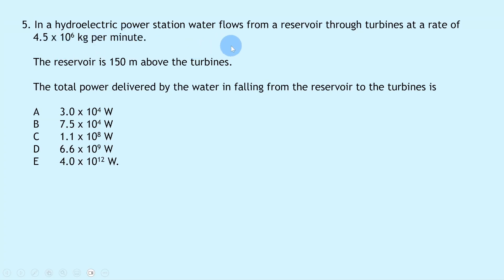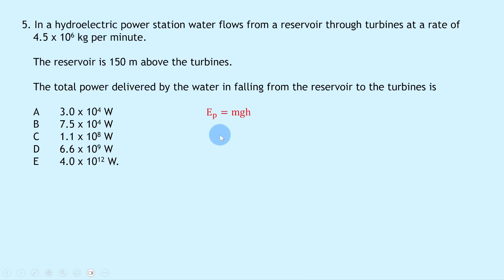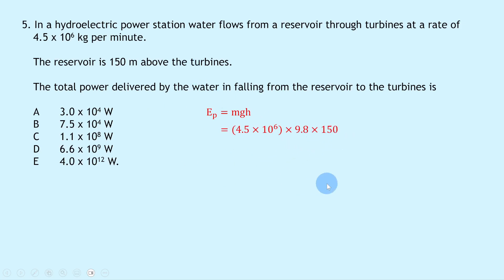Question 5 says in a hydroelectric power station, water flows from a reservoir through turbines at a rate of 4.5 × 10⁶ kilograms per minute. The reservoir is 150 metres above the turbines. To find the total power delivered, we first calculate gravitational potential energy using Ep = mgh: 4.5 × 10⁶ × 9.8 × 150 = 6.615 × 10⁹ joules. Remember not to round at this intermediate stage.